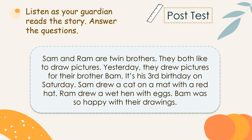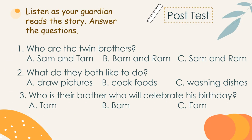For our post-test, listen as your guardian or I read the story, then answer the questions. Sam and Ram are twin brothers — there are rhyming words again. They both like to draw pictures. Yesterday they drew pictures for their brother Bam for his third birthday on Saturday. Sam drew a cat on a mat with a red hat. Ram drew a wet hand with eggs. Bam was so happy with their drawings. Who are the twin brothers — Sam and Tam, Bam and Ram, or Sam and Ram?